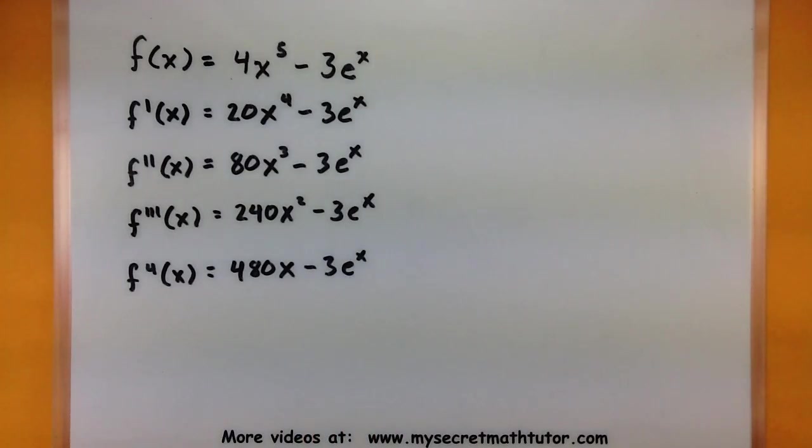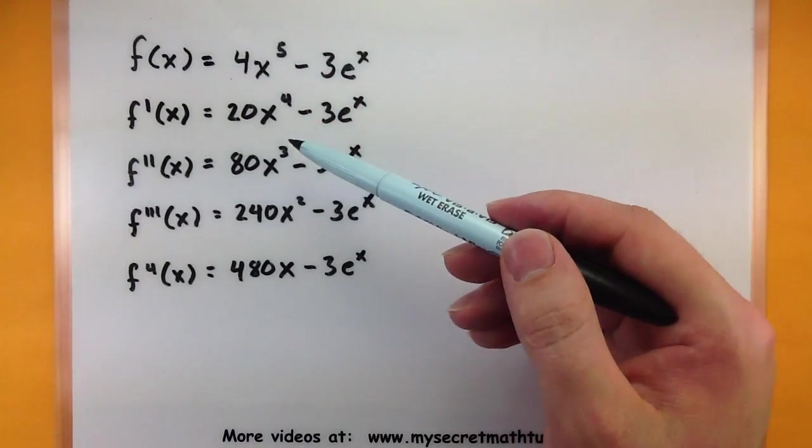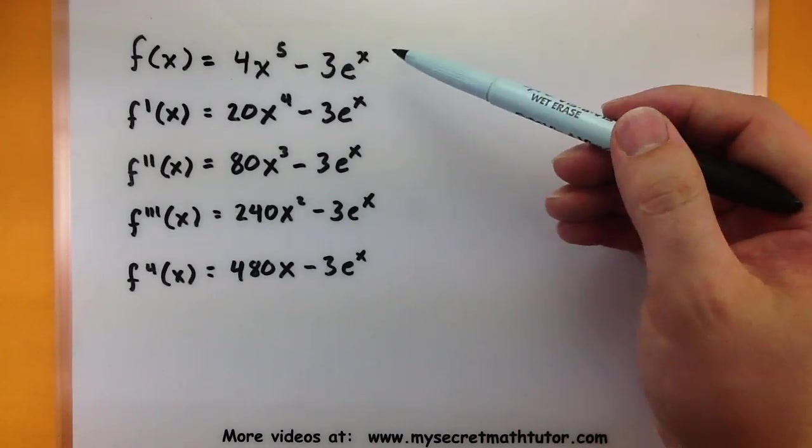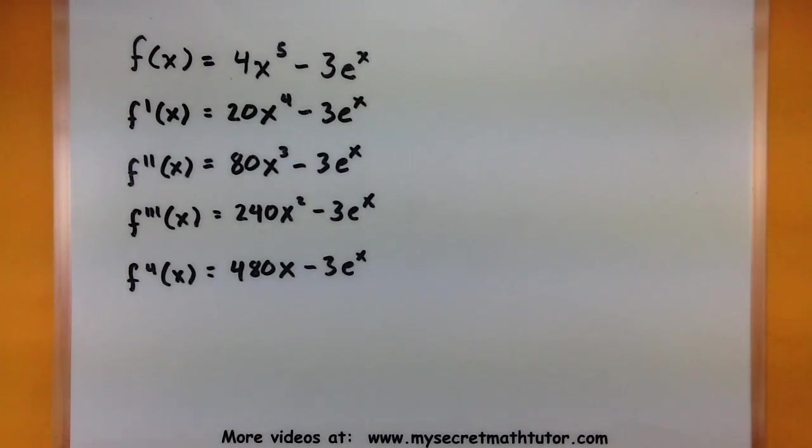So we take down our power 480x minus 3e to the x. Now what this example shows is that when you're working with polynomials that power will just keep reducing every time you take a derivative. But there do exist functions like e to the x that don't necessarily get any simpler as you take more and more of their derivatives.